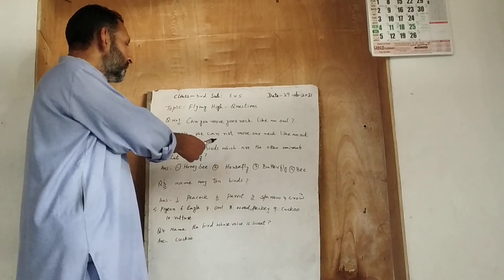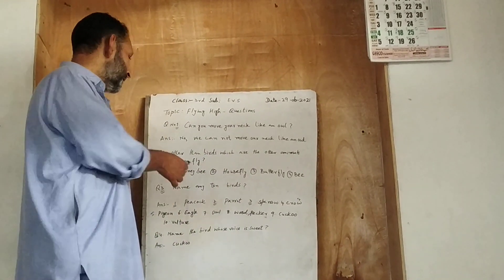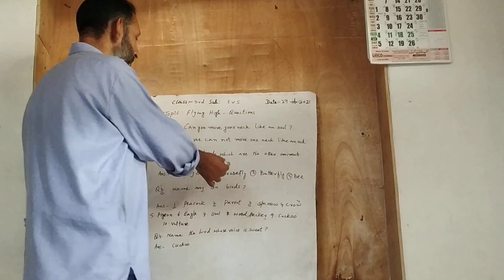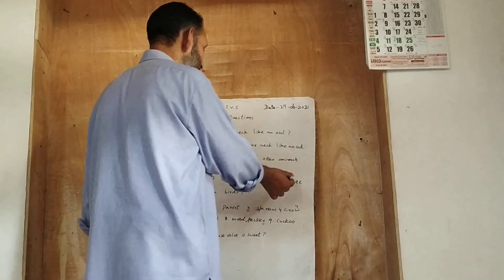Other than birds, which are the other animals that can fly. Number one is honey bee. Number two is house fly. Number three is butterfly. And number four is bee.